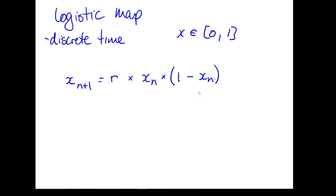If x_n is 0, it's going to stay 0, because 0 multiplied by anything is still 0. If x_n is 1, then (1 − x_n) is 0, so the system goes to 0 and stays there. You can think of x_n = 0 as representing everything is dead, and x_n = 1 as enough population to eat all available resources so it dies out the next season.